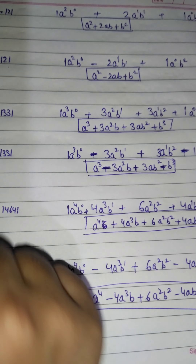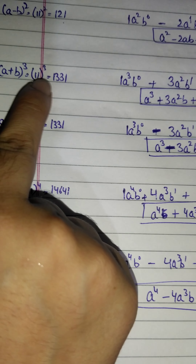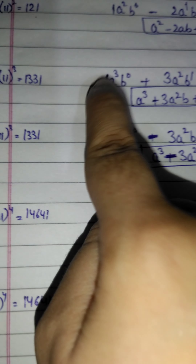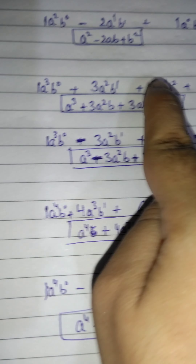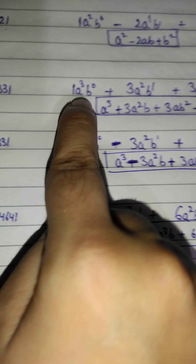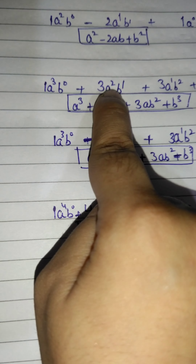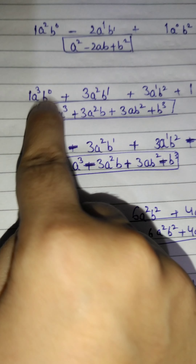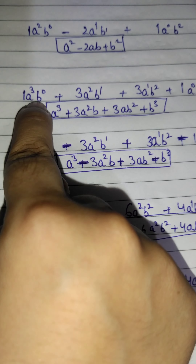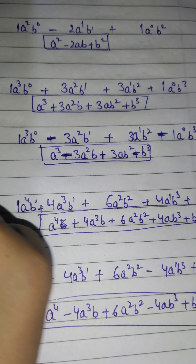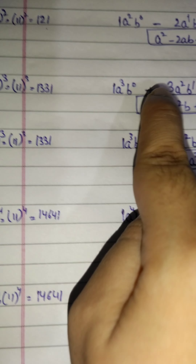Now for (a+b)³, we write 11³ = 1331, giving coefficients 1, 3, 3, 1. The highest power of a is 3, so we go: a³, a², a¹, a⁰. Then b increases: b⁰, b¹, b², b³. Since the sign is positive, all signs are positive.